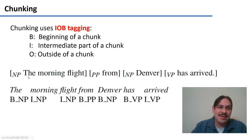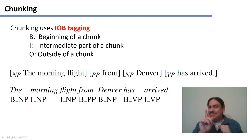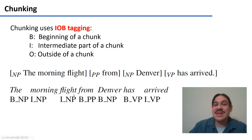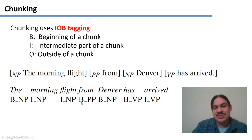For example, the word 'the' is the beginning of a noun phrase. The second word 'morning' is in the intermediate position of a noun phrase. The third word 'flight' — you might think it would be in an end position — but we tag it as the intermediate position of a noun phrase. We indicate the beginning of a new structure just by jumping to a new beginning. So everything is tagged beginning, intermediate, intermediate, and then another beginning — that's how we know one chunk ended, because we switch from intermediates to the beginning of a new thing.